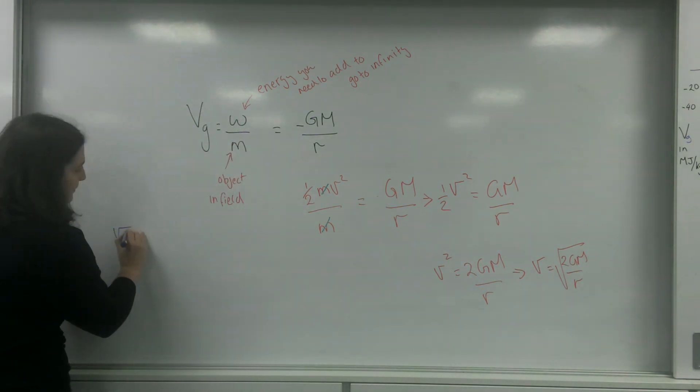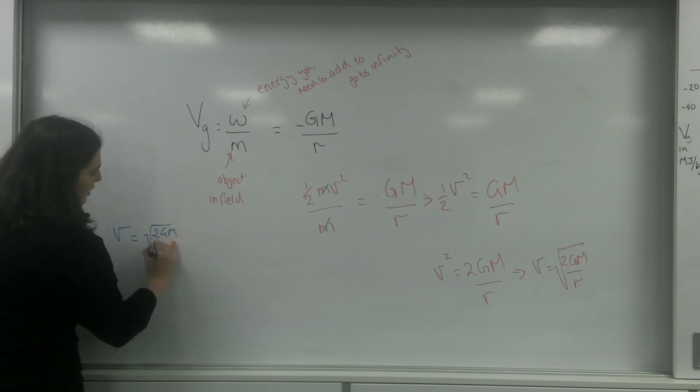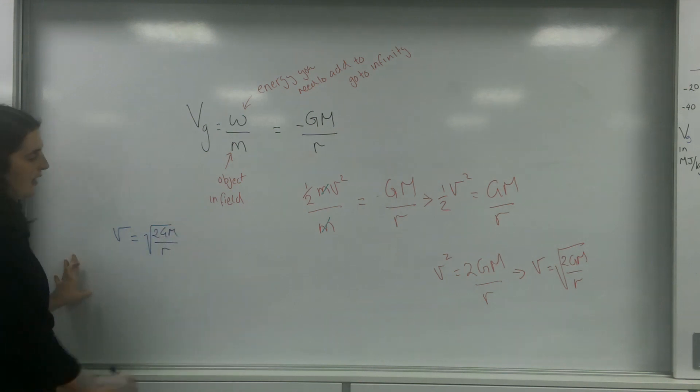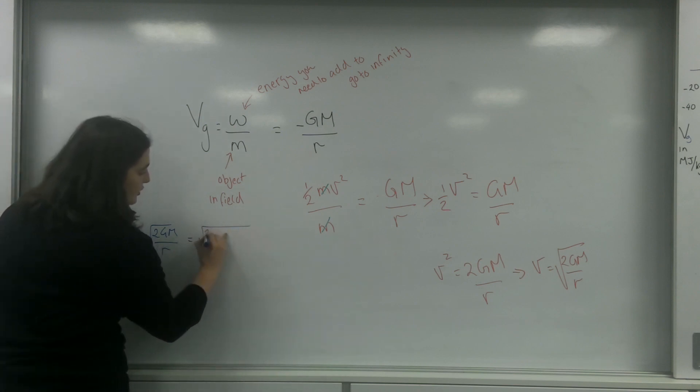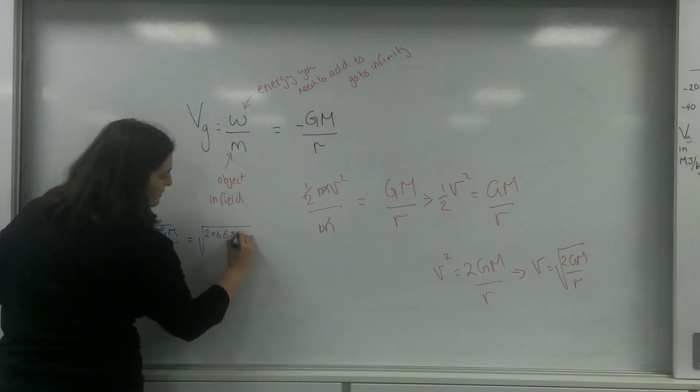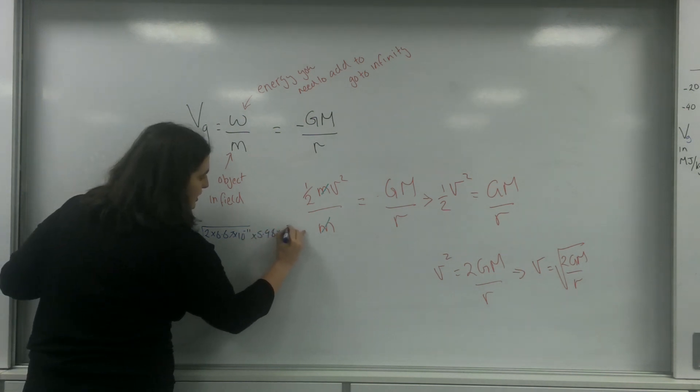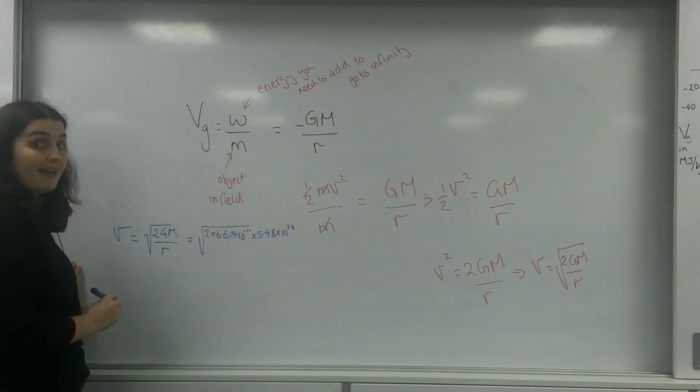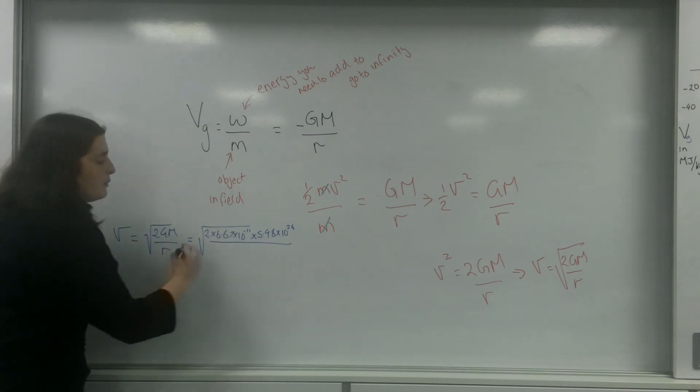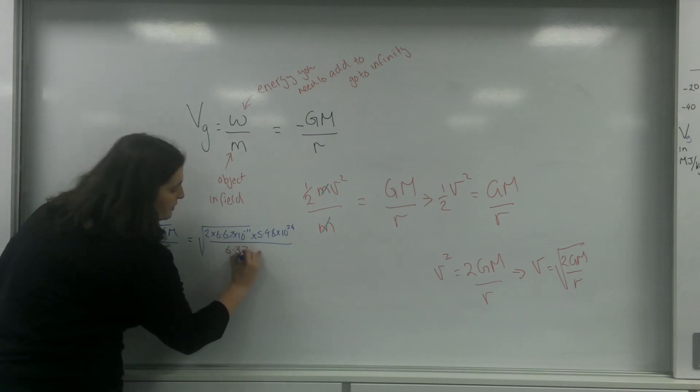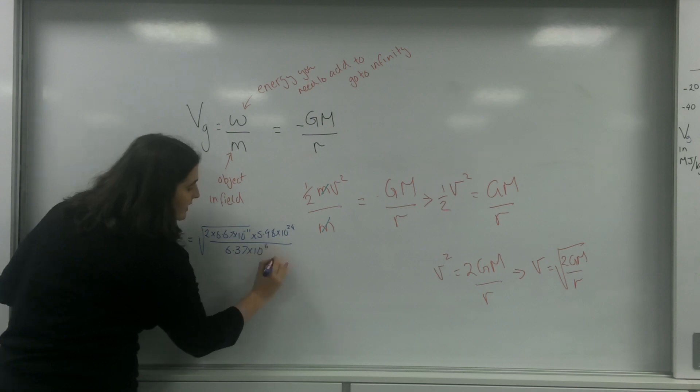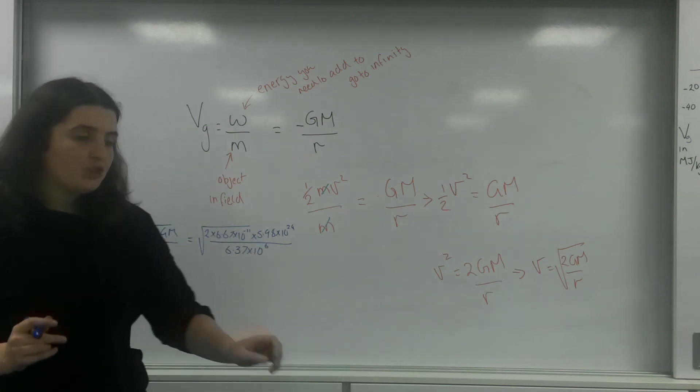So v equals the square root of 2GM over r. So 2 times 6.67 times 10 to the minus 11 times 5.98 times 10 to the 24, the mass of the Earth, and that is on your data sheet, divided by r, which is the radius of the Earth, which is 6.37 times 10 to the 6. And that again is on your data sheet too.